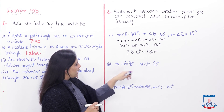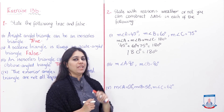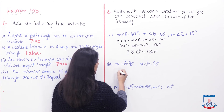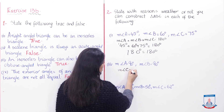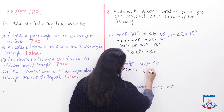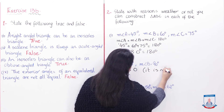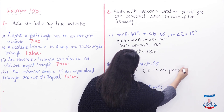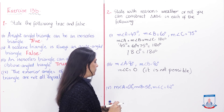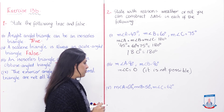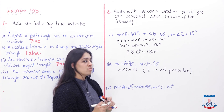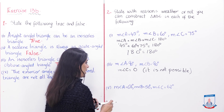If measure angle A = 90 and measure angle B = 90, then measure angle C would be zero. Do you think that triangle can be formed? It is not possible, because we need all three proper angles to make a triangle. So this triangle cannot be constructed.